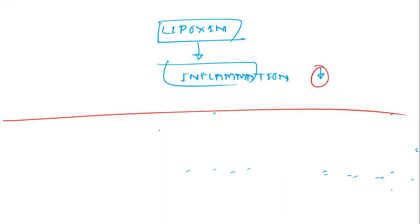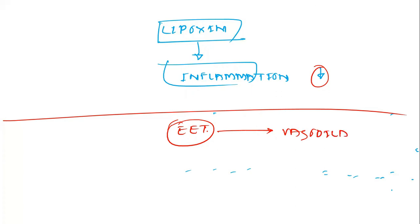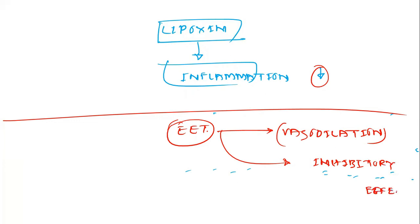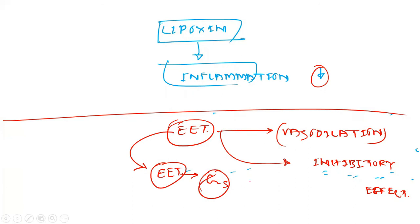Another eicosanoid is epoxyeicosatrienoic acid (EET). When epoxyeicosatrienoic acid binds with its receptor, which is Gs coupled, by the same mechanism described previously it will cause vasodilation and inhibitory effects. Thank you, see you again.